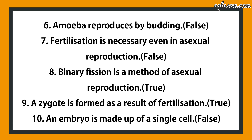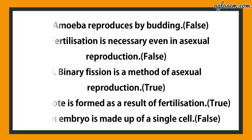Seventh: fertilization is necessary even in asexual reproduction — answer is false. Eighth: binary fission is a method of asexual reproduction — answer is true. Ninth: a zygote is formed as a result of fertilization — answer is true. Tenth: an embryo is made up of a single cell — answer is false.